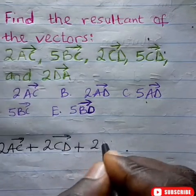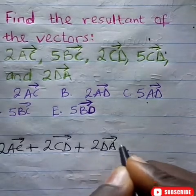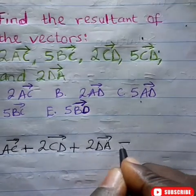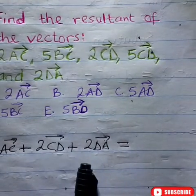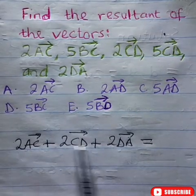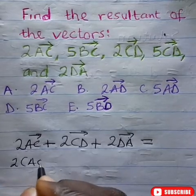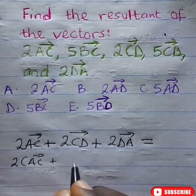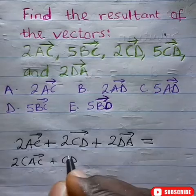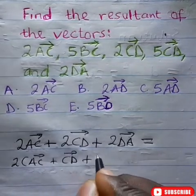So 2DA, I am just going to work this out and put it separately. So the next thing I'm going to do, let me just factor out 2 from this. I'm going to have 2 into AC plus CD plus DA.